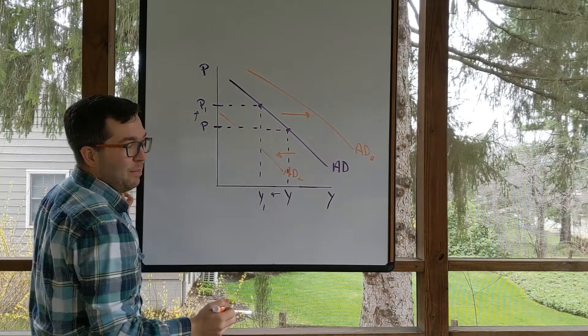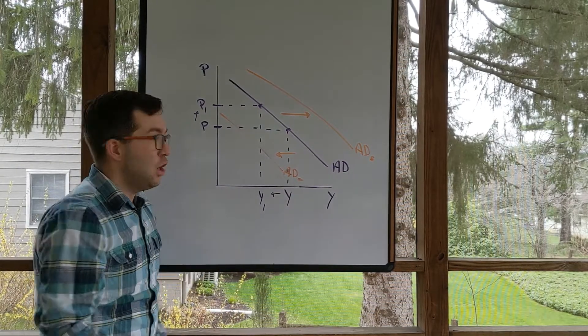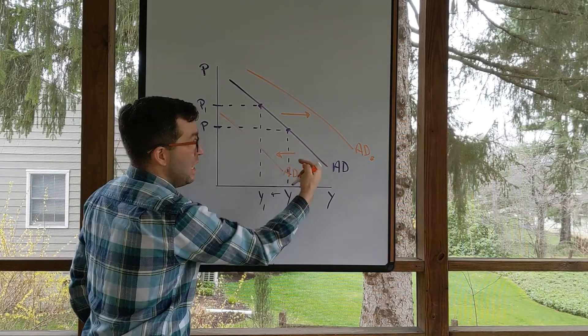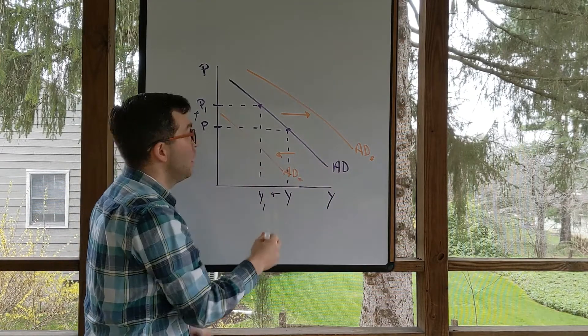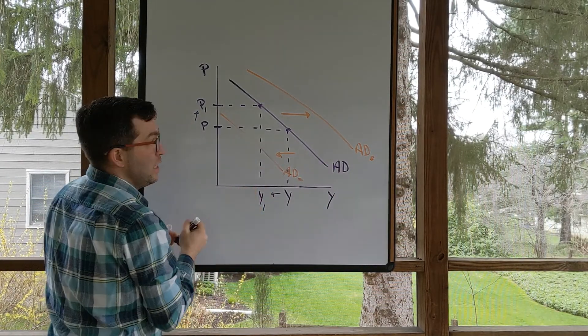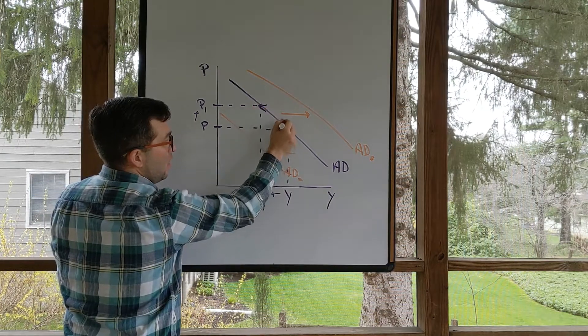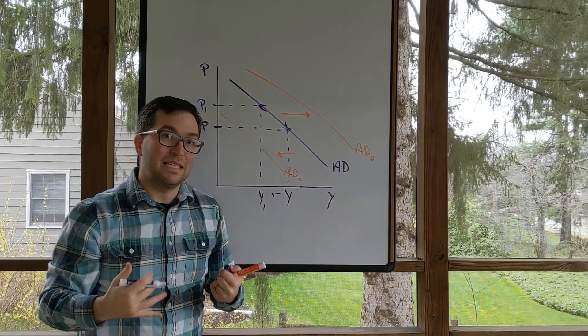Perhaps we see a decrease in aggregate demand, a shift to the left. So an increase is a shift to the right, a decrease is a shift to the left. Movement along is when you see a change in the price level that's moving it along the exact same curve.